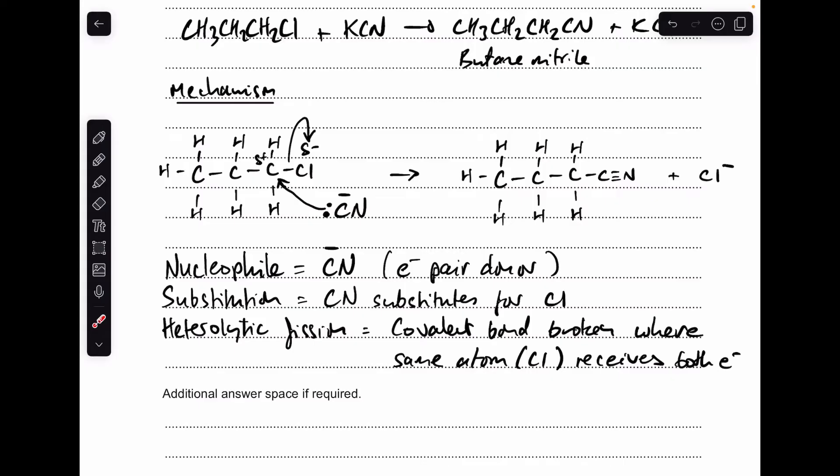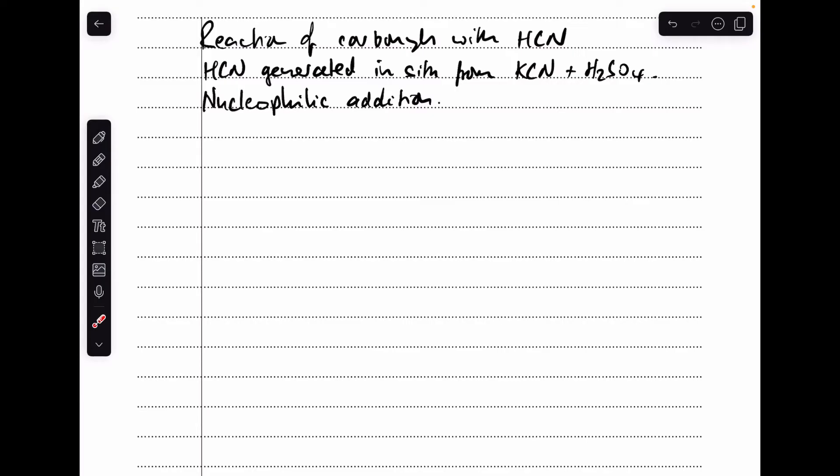And I'm just covering all bases here. So heterolytic fission has taken place there, and that's because a covalent bond has been broken, where the same atom, so obviously the chlorine in this case, has received both of the electrons. So moving on to the second example.